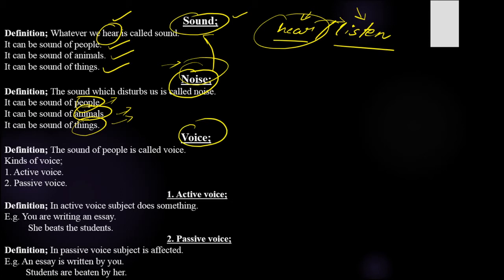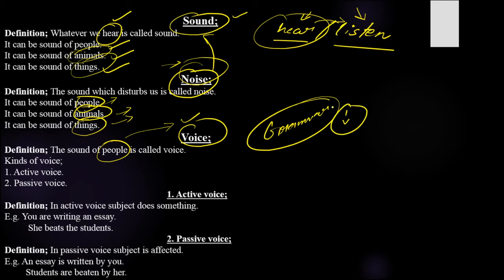What do we mean by voice? Sound is anything that is produced and passes through your ear. Voice specifically is the sound of people. The sound of animals and the sound of things have their own names, but the sound of people is known as voice. We are learning grammar here, not science, so what we need to know is what we mean by voice — and voice is the sound produced by people.